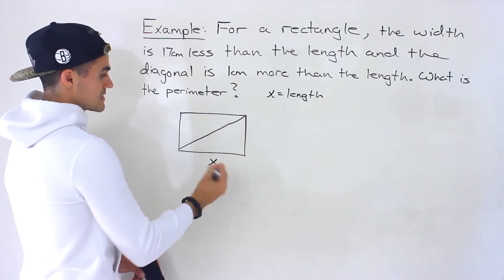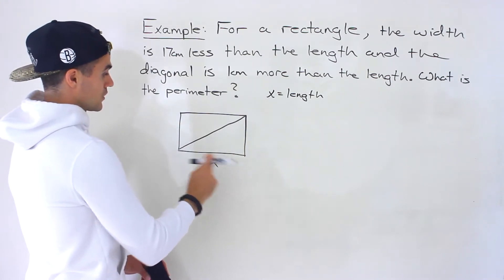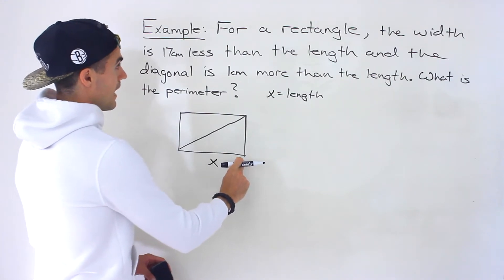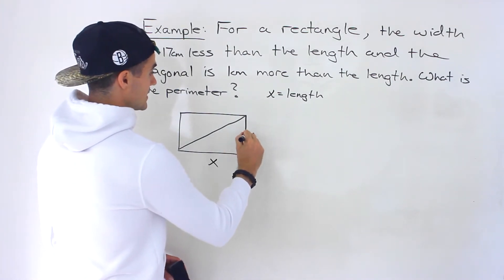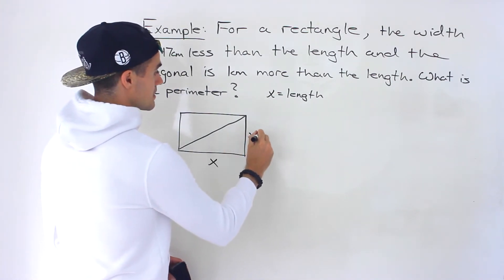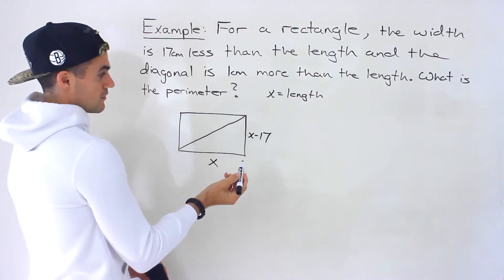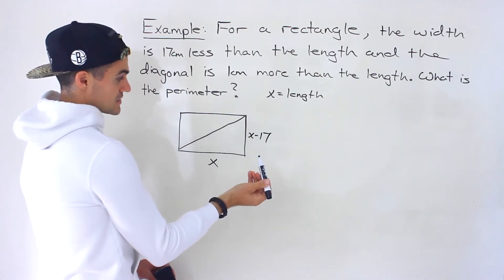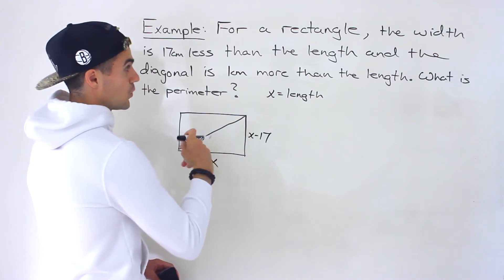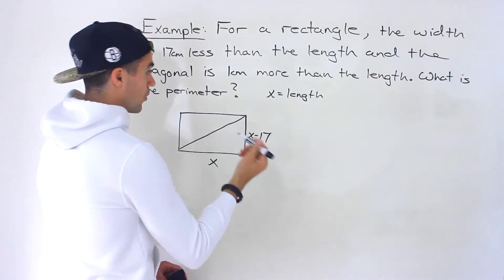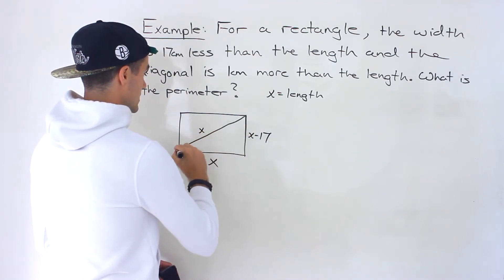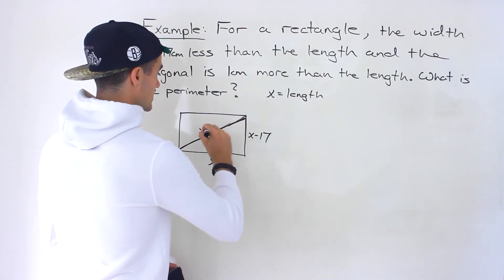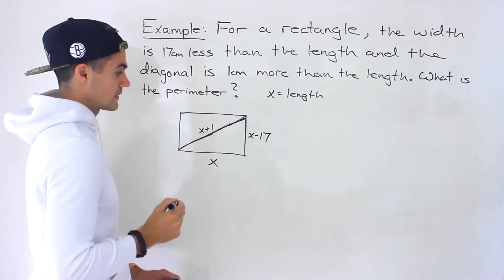So that means the length is x. The width is 17 less than the length, so that's going to be x minus 17. And then the diagonal is one centimeter more than the length, so the length of this diagonal is going to be x plus 1.